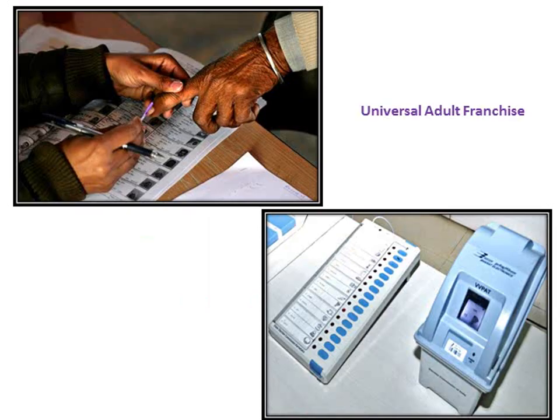The next feature of our Indian constitution is Universal Adult Franchise. All the people above 18, irrespective of caste, creed, colour, religion, race, or gender, have the right to vote.